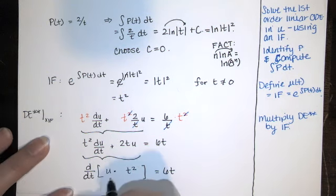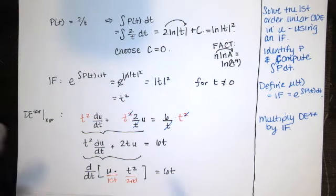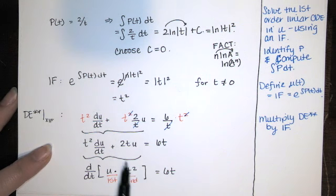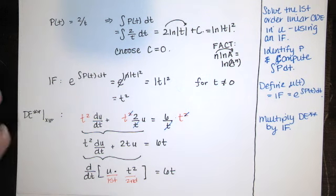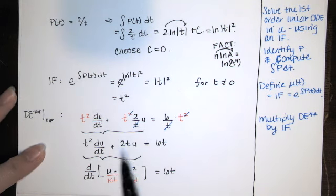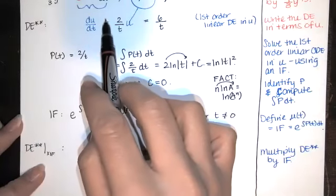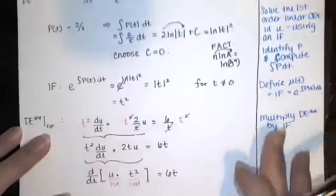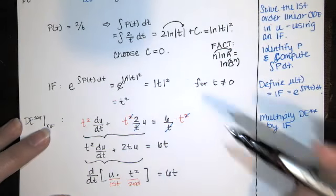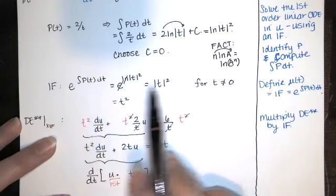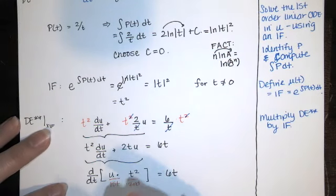If we want to check our work, we can use the product rule. u is a function of t and t squared is a function of t, so the derivative of this product is the derivative of the first times the second — that's du/dt times t squared — plus the derivative of the second, which is 2t, times the first, u. That actually checks out. It's always a good idea to check your work at this step to make sure you didn't make any algebra errors or anti-differentiation errors earlier.